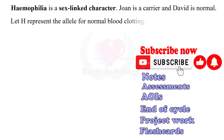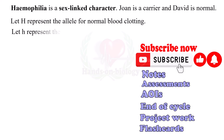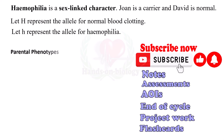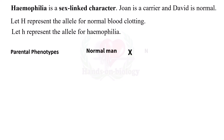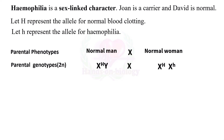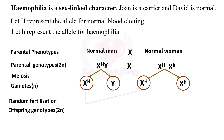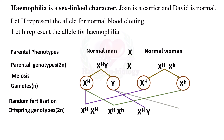Let capital H represent the allele for normal blood clotting, and let small h represent the allele for hemophilia. Parental phenotypes: normal man with a normal woman in physical appearance. Parental genotypes: a normal man with a carrier woman. Meiosis leads to the formation of gametes, and chromosomes separate along with their alleles, followed by random fertilization to form offspring genotypes: one carrier daughter and one hemophilic son.